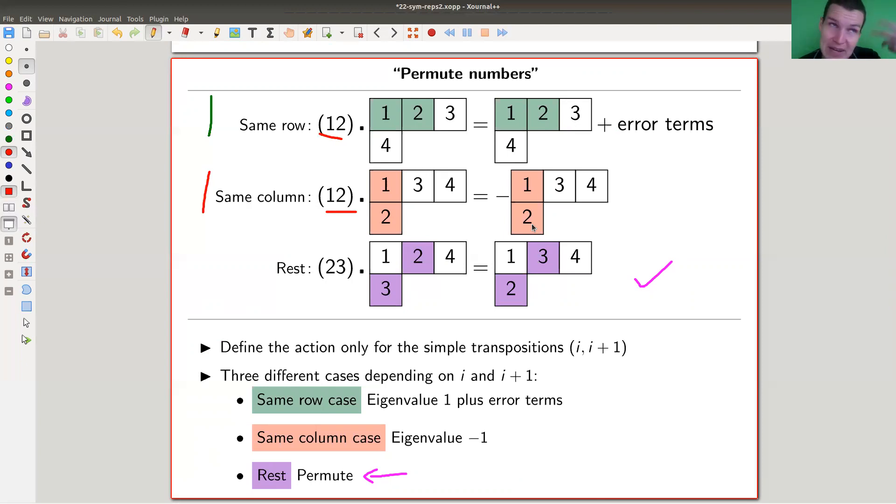What I need to do is think of a permutation as having two natural eigenvalues: eigenvalue one and eigenvalue minus one. Whenever that happens, I make a decision that one should spit out eigenvalue one, which is my same row case—you see the same tableau with plus one in front. The other one should spit out eigenvalue minus one, so there's a minus one in front.